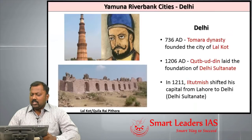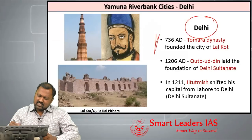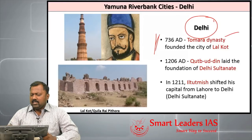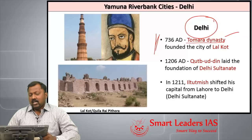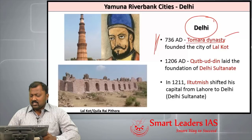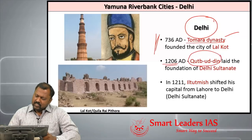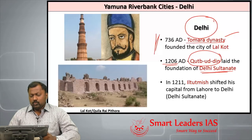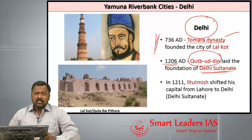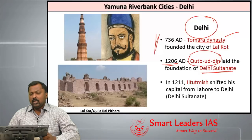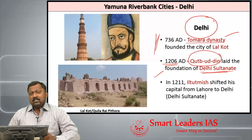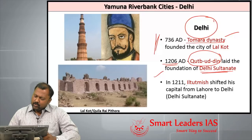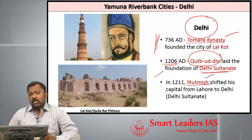Delhi comes into prominence during 736 AD, when it was made an important city by the Tomara rulers. In 1206, Qutbuddin Aibak laid the foundations of the Delhi Sultanate. However, he ruled from Lahore, not Delhi. Delhi was made the capital of the Delhi Sultanate only during the time of Iltutmish, who shifted the capital from Lahore to Delhi.